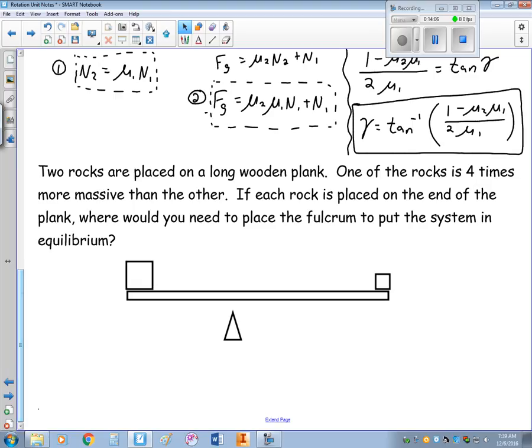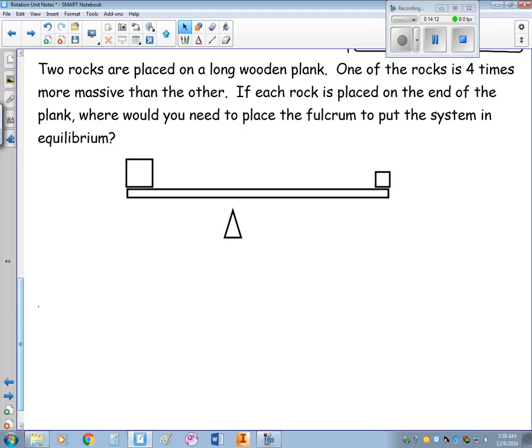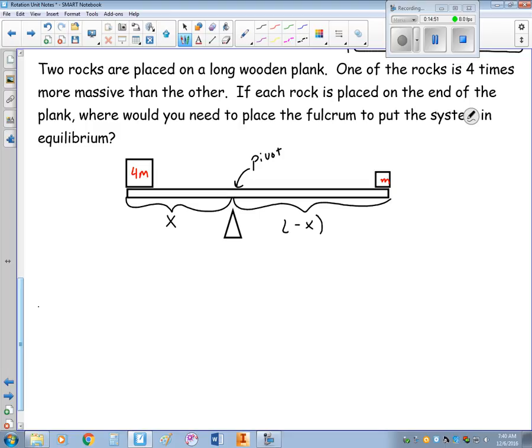So we have two rocks placed on a wooden plank. One rock is four times the mass of the other one. If each rock is placed on the end of the plank, where should you place the fulcrum to keep the system in equilibrium? Okay, so I'm going to put this relative to the 4m. So my answer will be x, x will equal something. This right here will be my pivot. This length right here, then, if the entire length of this plank is L, will be L minus x.